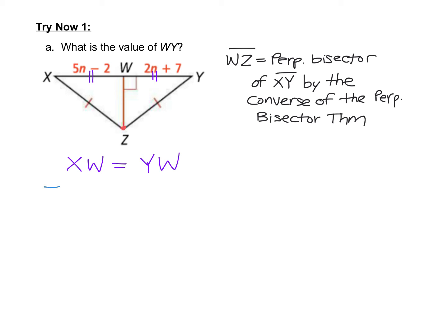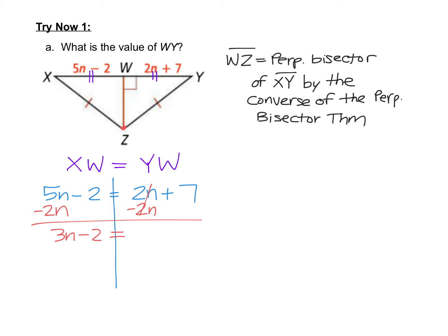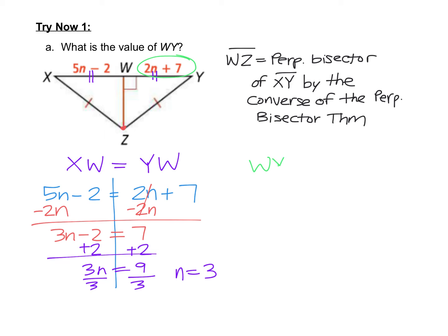Substituting our values: 5N minus 2 equals 2N plus 7. Subtracting 2N from both sides gives 3N minus 2 equals 7. Adding 2 to each side gives 3N equals 9, and dividing by 3 gives N equals 3. We're looking for WY, which is 2N plus 7. Substituting N equals 3: 2 times 3 plus 7 equals 6 plus 7 equals 13. So WY equals 13.